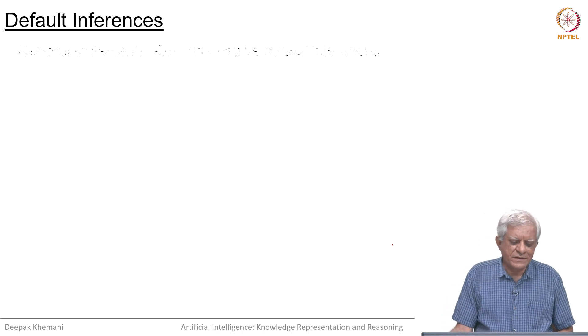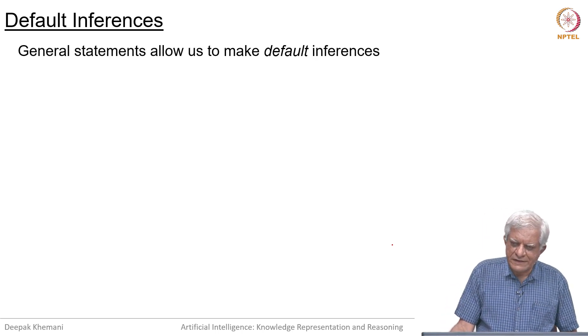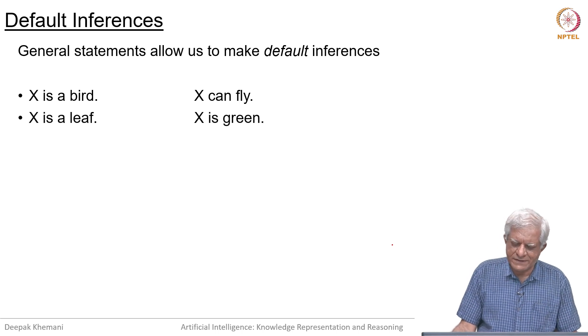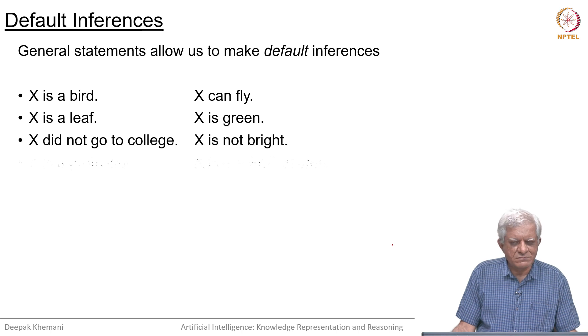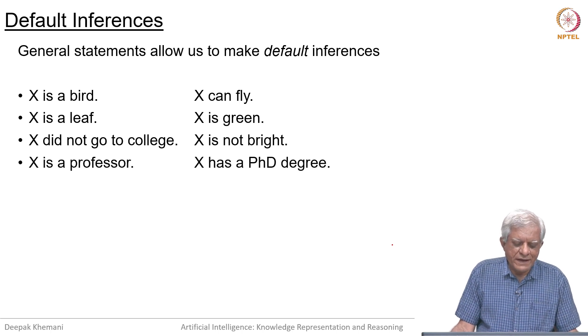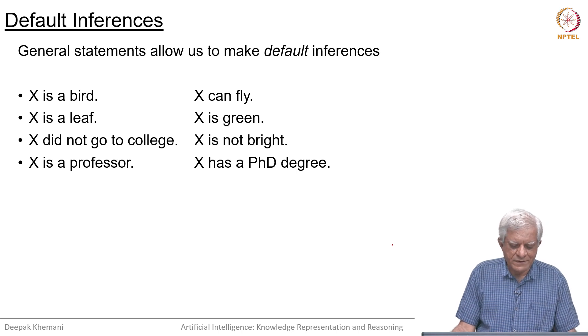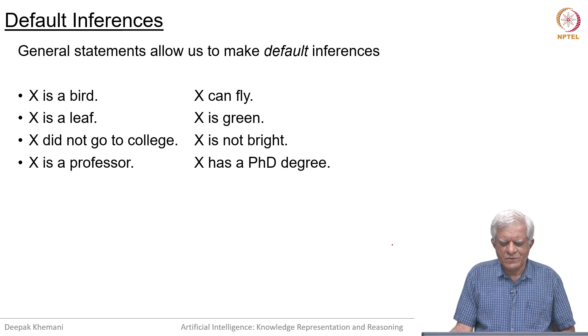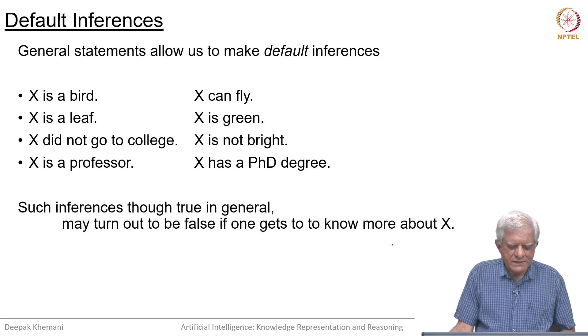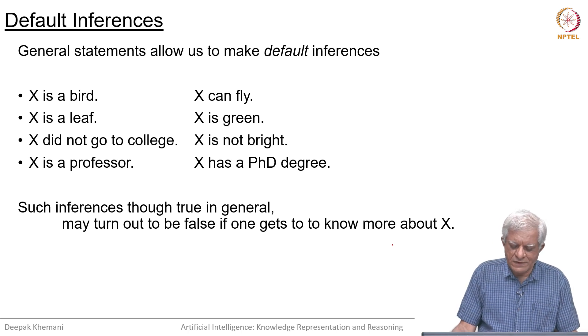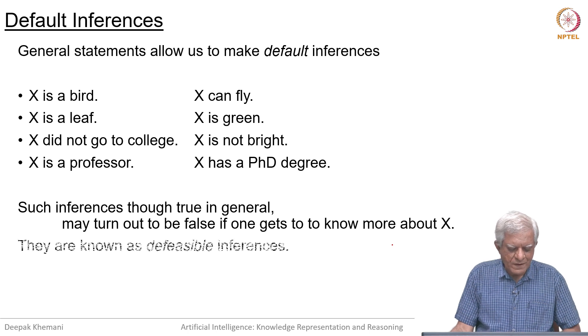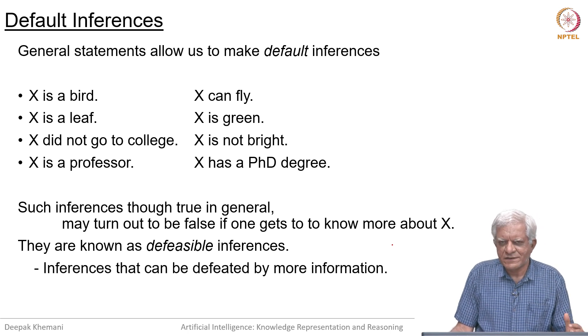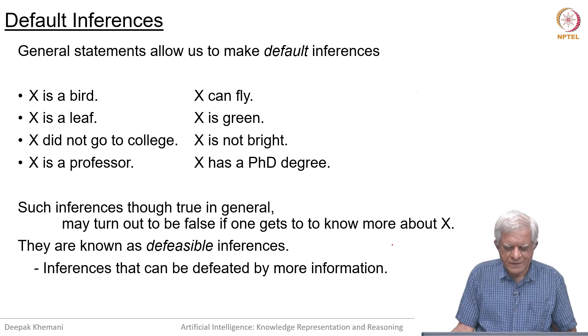What are the kind of inferences that we would like to make? These inferences are called default inferences. For example, you might say x is a bird and we should be able to infer that x can fly, or if you say x is a leaf, we should be able to say x is green. X did not go to college, we might infer that x is not bright. X is a professor, we might infer that x has a PhD degree. Now, these are inferences which would normally be true, though they may have exceptions. Such inferences though true in general may turn out to be false if one gets to know more about x essentially. They are known as defensible inferences in the sense that conclusions that can be defeated, in the sense that made false.